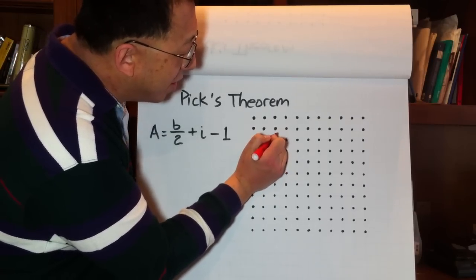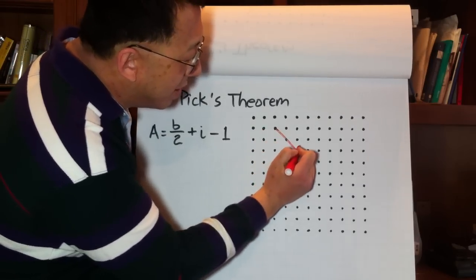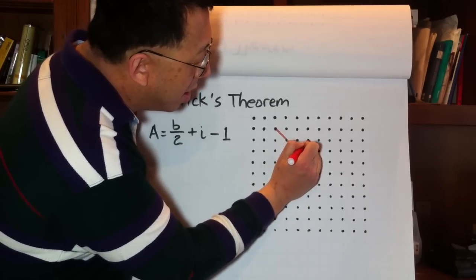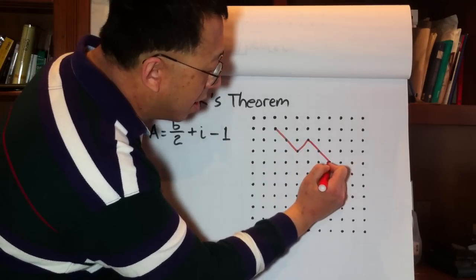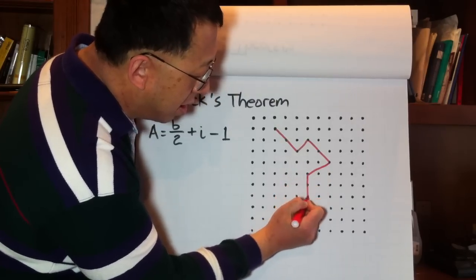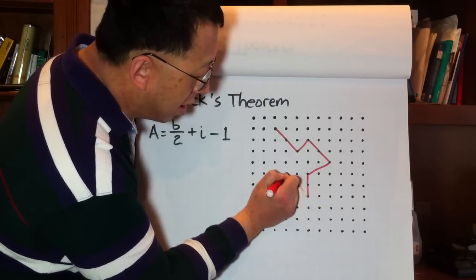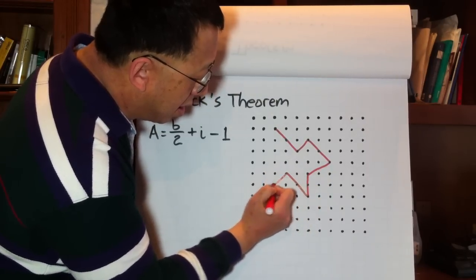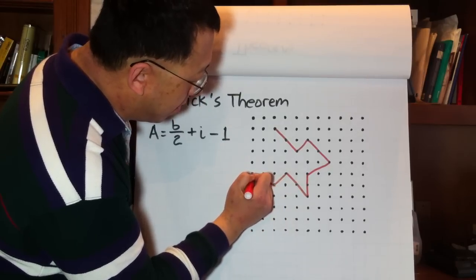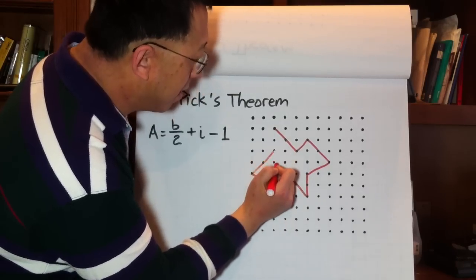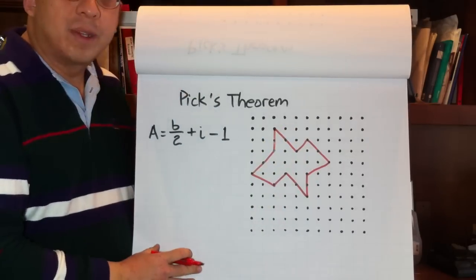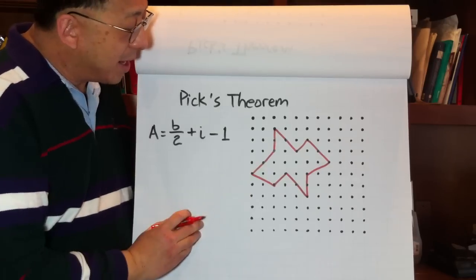So, let's see, we're going to take this point over here. Okay, we're just going to make it up as we go along. Okay, so here we have a polygon.